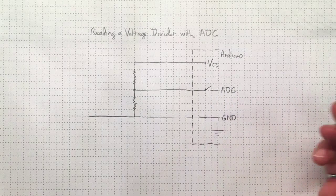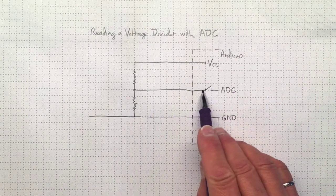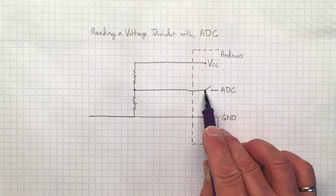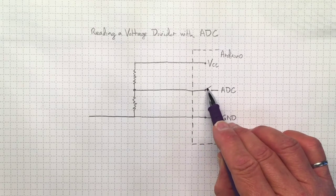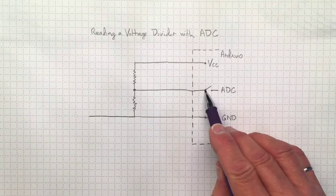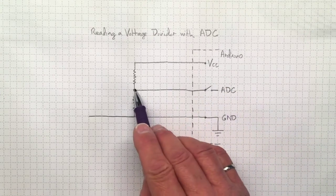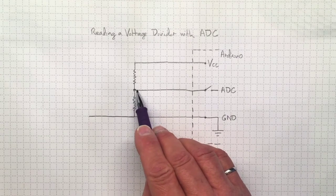When we call analog read to sample from the system, this switch inside the Arduino circuitry will close, connecting the analog-to-digital converter to our circuit, and we can take some samples. A tiny little bit of current is going to flow into the analog-to-digital converter in order to enable it to make that conversion.